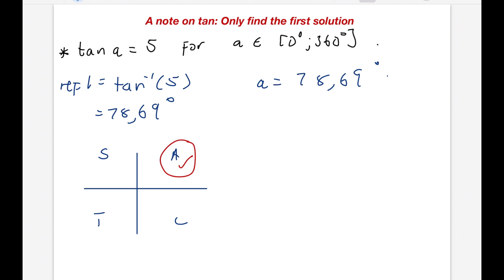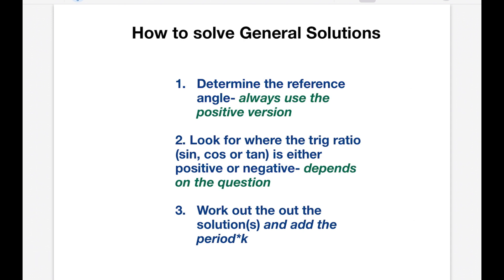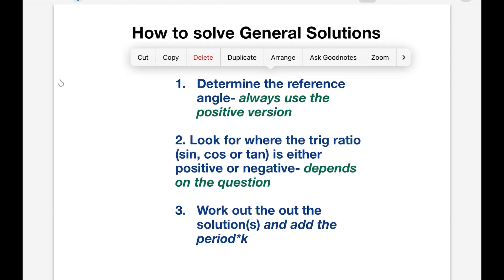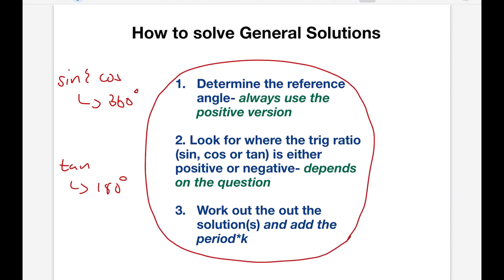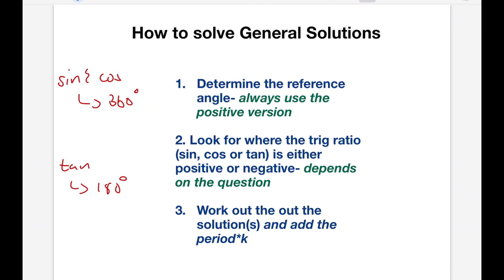You now know how to solve a trig equation for the range 0 degrees to 360. We're going to talk about general solutions now. To find the general solution, follow the exact same steps we've been following — except in the end, when you find your solution, you must add the period times k. The period of a sine and a cos graph is 360 degrees; the period of a tan graph is 180 degrees. Same steps, except as soon as we write out the solutions, we must add the period times k.